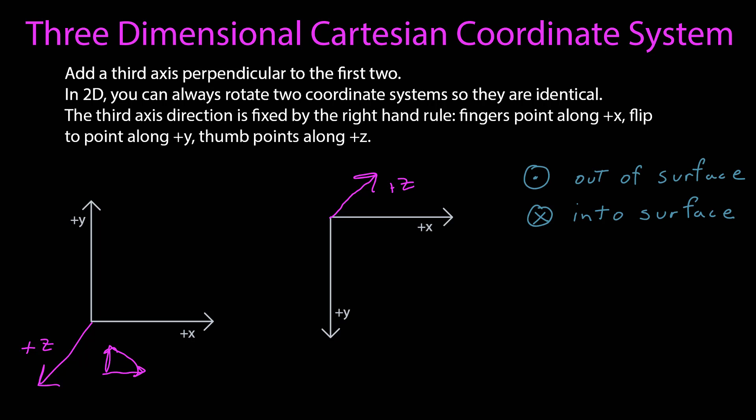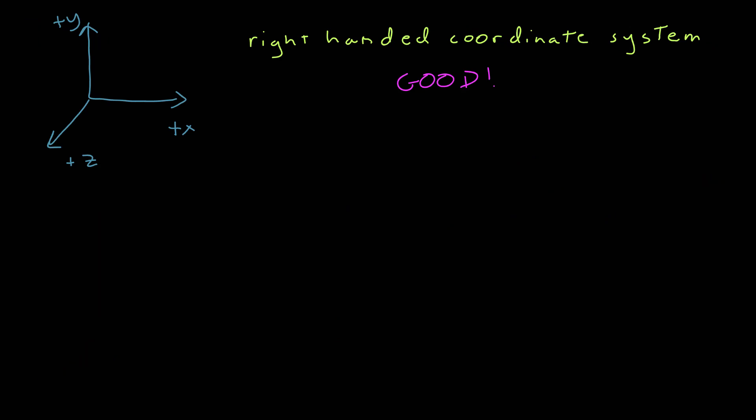Let me introduce you to another piece of notation. We'll sometimes use this notation to be a vector out of the surface of what we're writing on. And we have this notation to mean into the surface of whatever we're writing on. And the way to remember this is you think about an arrow, where here this is the tip of the arrow coming out of the surface at you. And now you're looking at the feathers of the arrow going into the surface you're writing on.